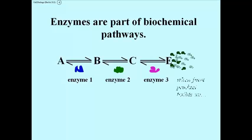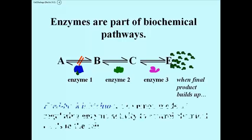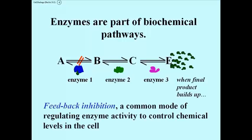As molecules of E build up, it's possible that one of them might actually go back and bind to enzyme 1, changing its shape and preventing it from acting. That's called feedback inhibition, which is a very common way of regulating enzymes to control the levels of E in a cell.